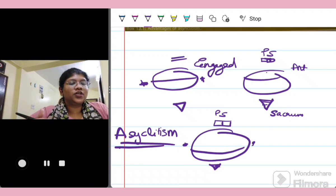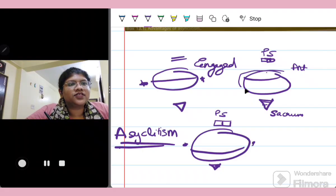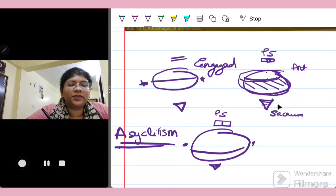So when the sagittal suture lies anteriorly, that means in this case, suppose the sagittal suture deflects more anteriorly, that is towards the pubic symphysis, the posterior parietal bone becomes more prominent. So this is known as the posterior asynclitism or posterior parietal presentation.